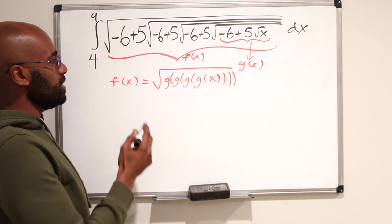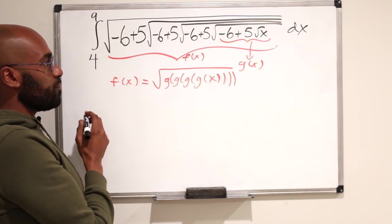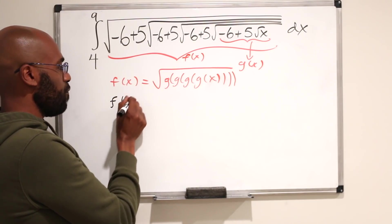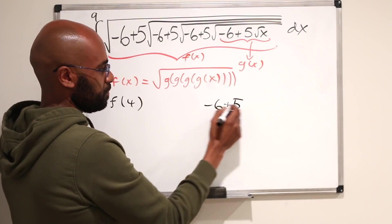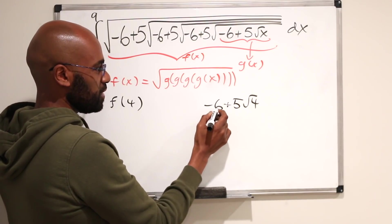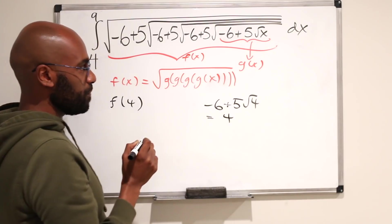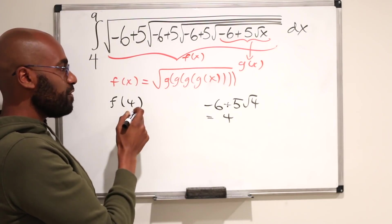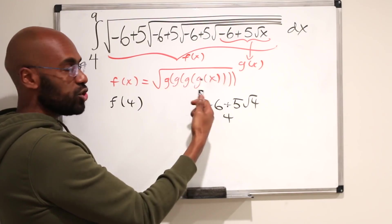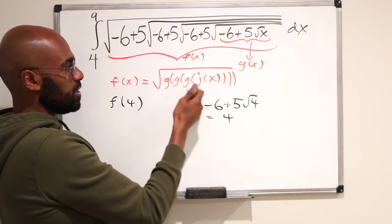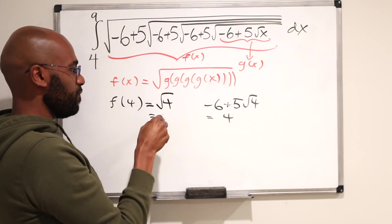The first thing I want to do is investigate f and look at its value on the bounds. So for example, let's look at f of 4. g of 4 is negative 6 plus 5 times the square root of 4, which is negative 6 plus 10, so we get 4. So g of 4 is 4, and f of 4 is the square root of g of g of g of g of 4. Since 4 is fixed under g, all of these iterations will end up with 4, and so we'll have the square root of 4, which is 2.